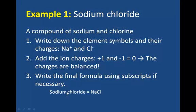Let's look at some examples. In the first example, we'll use sodium chloride, or table salt. Sodium chloride is a compound of sodium and chlorine. The first step would be to write down the element symbols and their charges. So sodium has a charge of positive 1, chlorine has a charge of negative 1. We can determine those charges from the periodic table. We'll add the ion charges together, and we see that they balance out at zero. This means that the final formula can be written without subscripts, and so the final formula becomes NaCl.